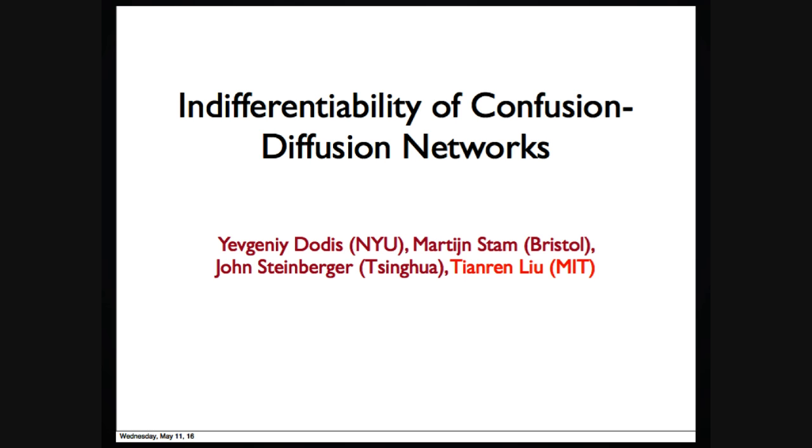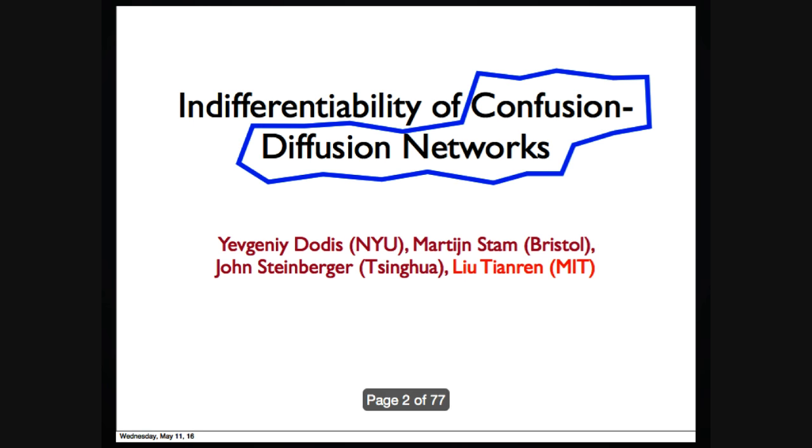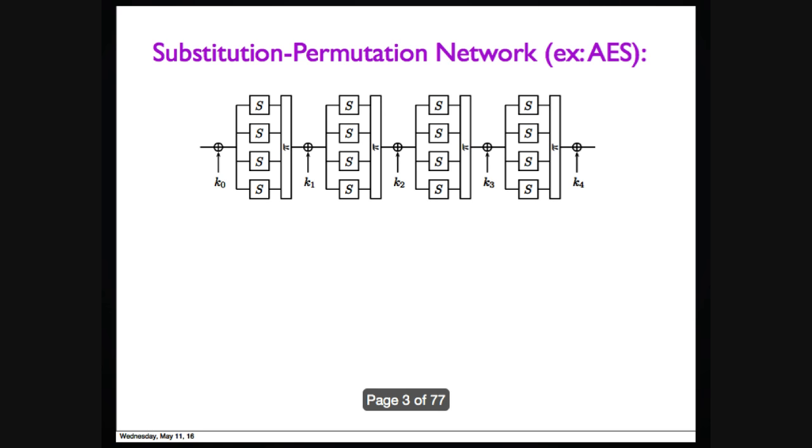So the first question, what's confusion-diffusion networks? It's a terminology we invented ourselves. Well, it's just an invention. The network is motivated by substitution-permutation networks, like AES. It's a very famous one.